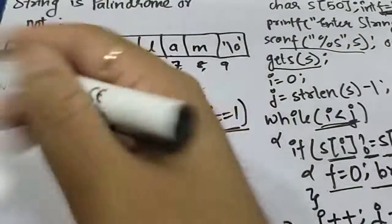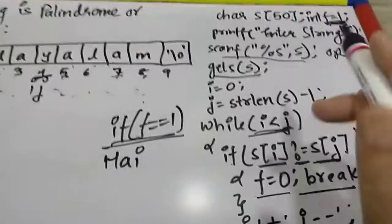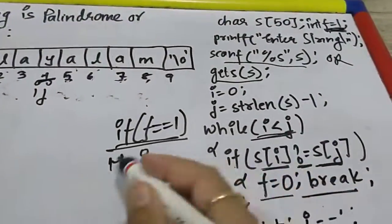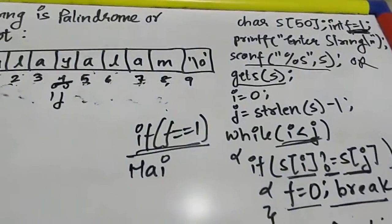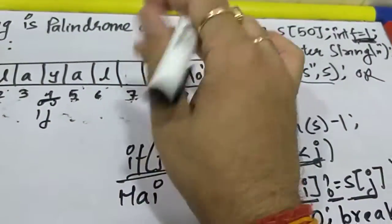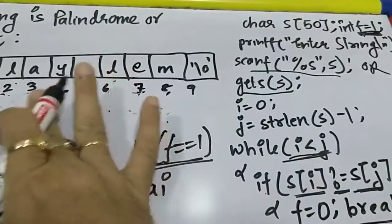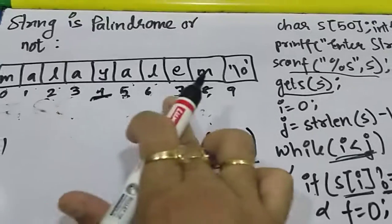As you see here, not equal nahi mila, so while loop end hone ke baad the value of f remains one, so it is a palindrome. Malayalam is a palindrome. But suppose I made a mistake somewhere, a spelling mistake. Suppose here I wrote 'e', m-a-l-a-y-a-l-e-m.